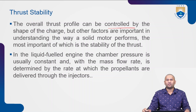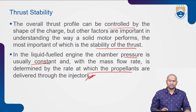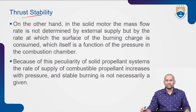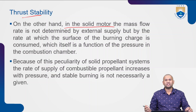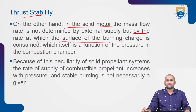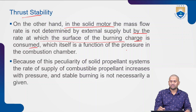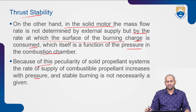Once the rocket is in flight, it is beyond our control and dilution of exhaust products by the atmosphere must be relied upon. The overall thrust profile can be controlled by the shape of the charge, but other factors are important in understanding how a solid rocket motor performs — most important being the stability of the thrust. In a liquid fuel engine the chamber pressure is usually constant and mass flow rate is determined by the rate at which propellants are delivered through the injectors. In a solid rocket motor, the mass flow rate is not determined by an external supply — whatever fuel is placed in the casing is fixed; there is no refill. The mass flow rate is determined by the rate at which the surface of the burning charge is consumed, which itself is a function of pressure in the combustion chamber.